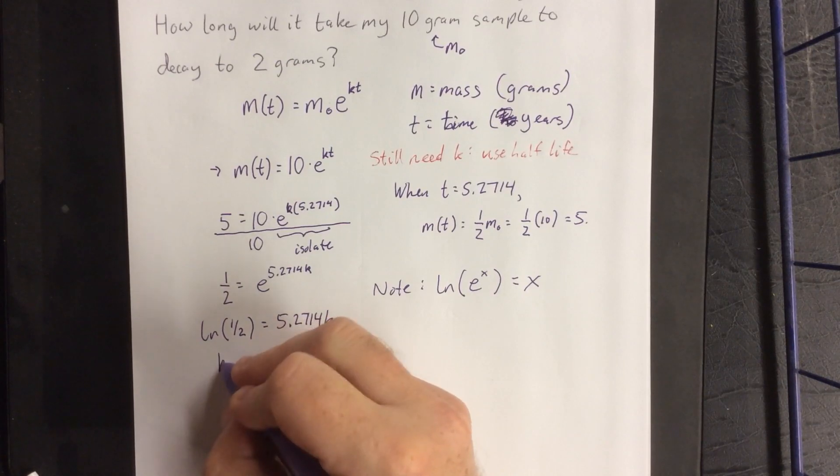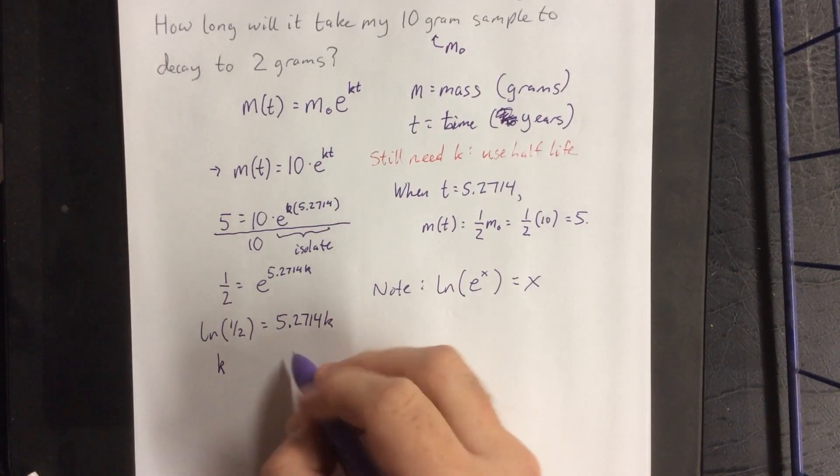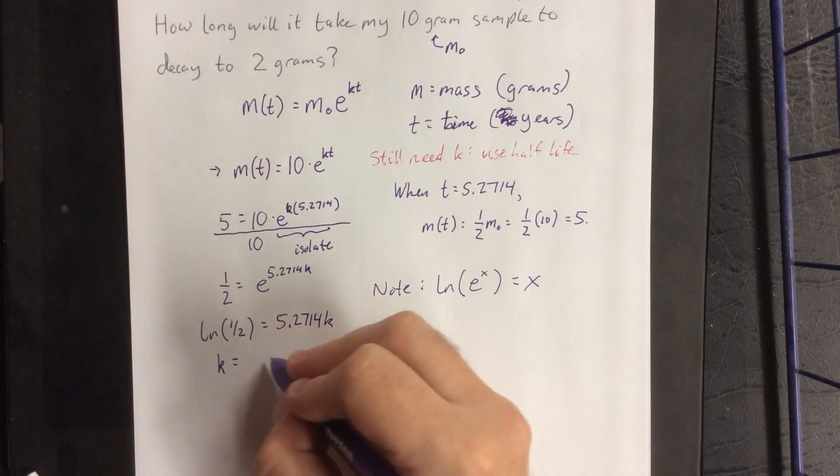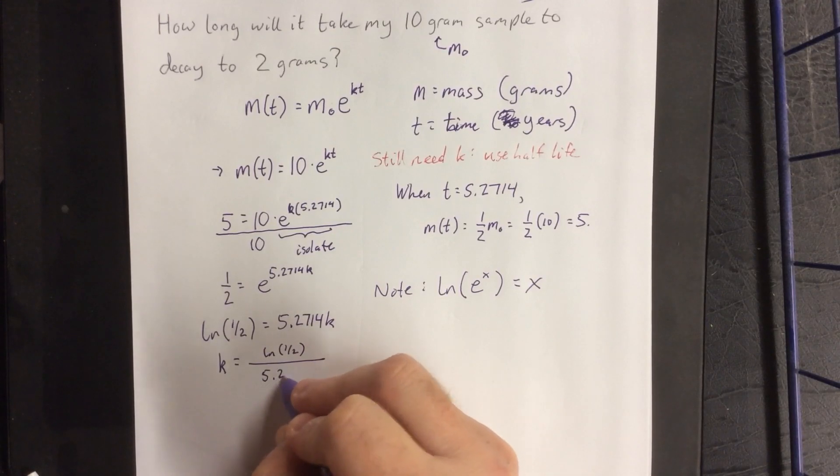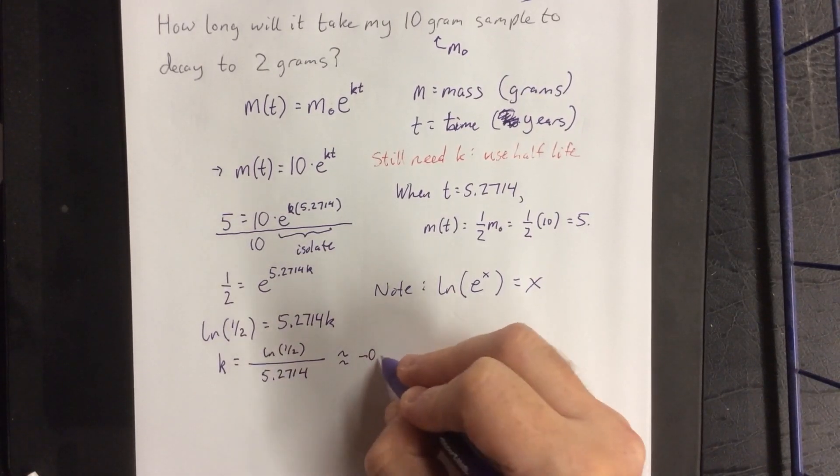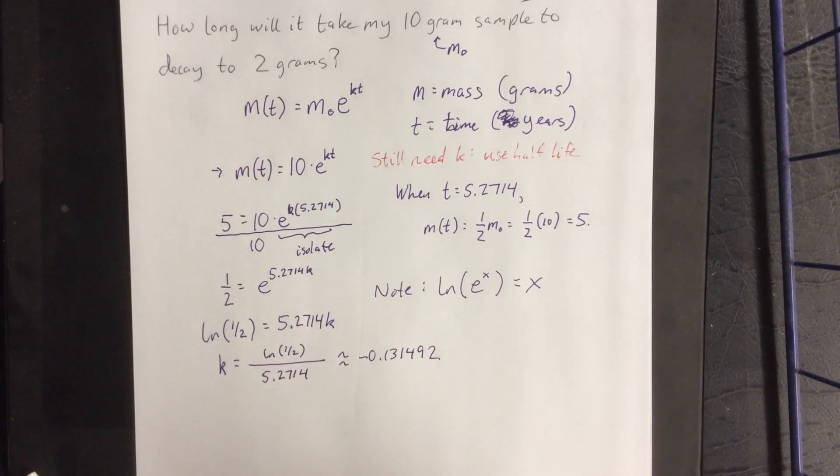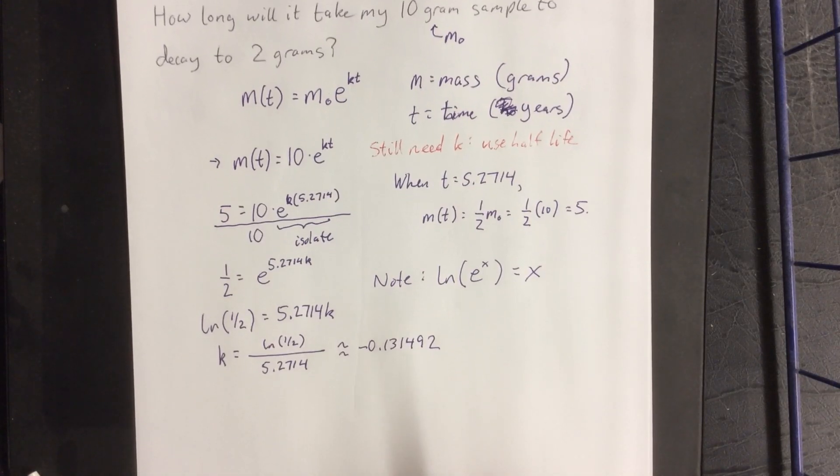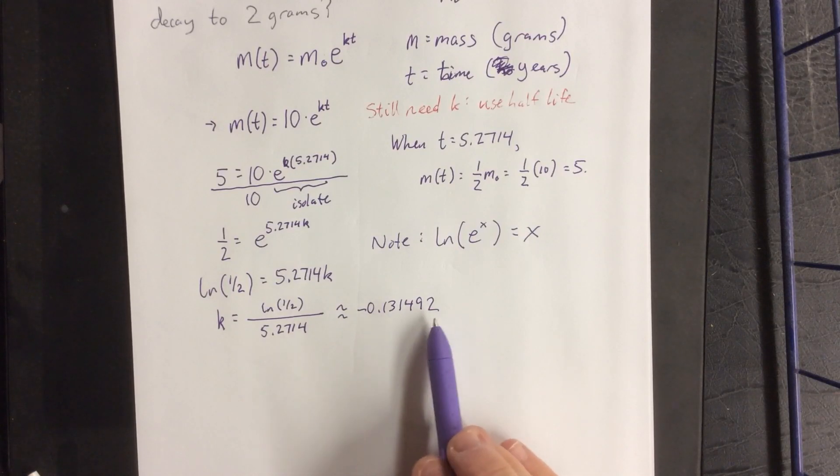For a last step here, we'll take the 5.2714 coefficient of k, and we'll divide both sides by this. Now at this point you will likely want to grab a calculator. However, I left mine in the office, so I'm just going to have to do this in my head. Just kidding, I did this problem yesterday and I still remember the answer.